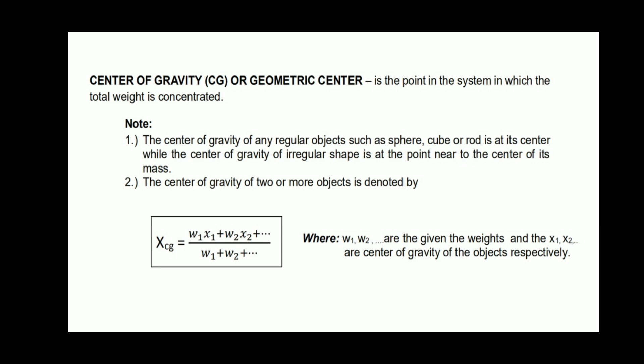Center of gravity, or CG, or geometric center, is the point in the system in which the total weight is concentrated. The center of gravity of any regular objects such as a sphere, cube, or rod is at its center, while the center of gravity of an irregular shape is at the point near the center of its mass. The center of gravity of two or more objects is denoted by x sub CG equals w sub 1 times x sub 1 plus w sub 2 times x sub 2, and so on, all over w sub 1 plus w sub 2 plus dot dot dot, where w sub 1 and w sub 2 are the weights, and x sub 1 and x sub 2 are their respective distances.